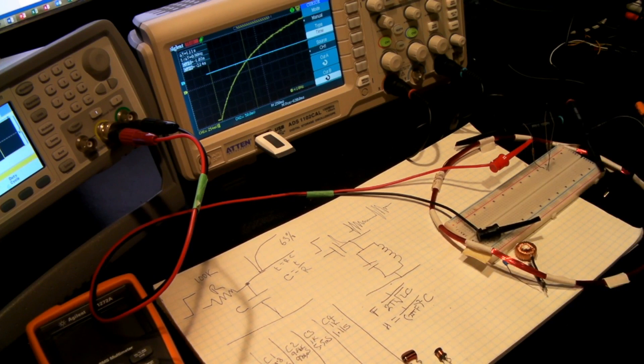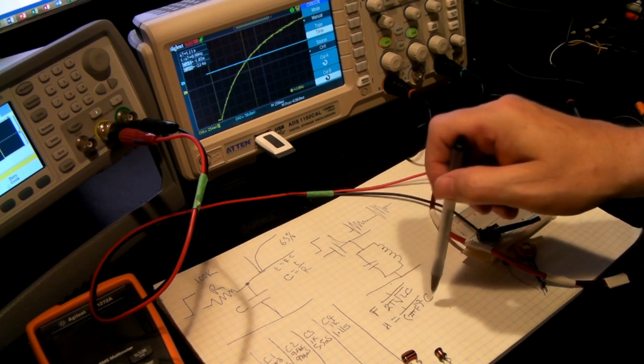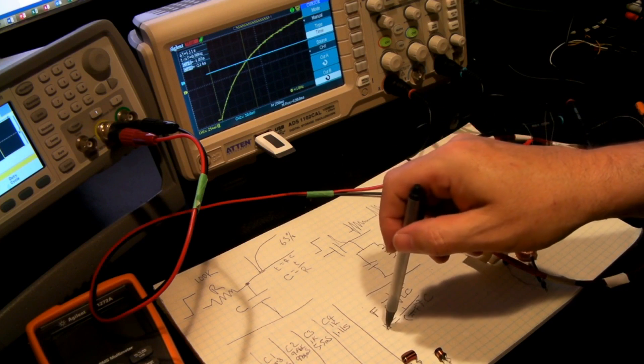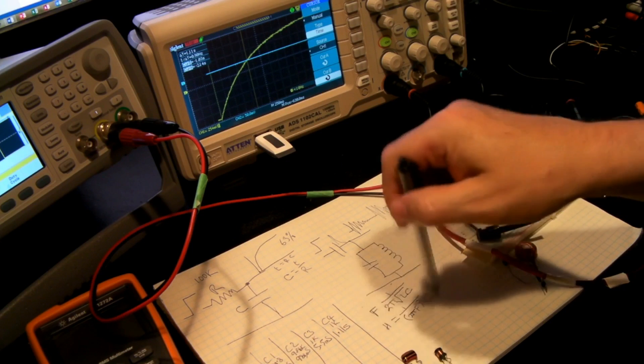So that ends up giving us, just rearranging this formula, that now gives us the value of the inductance in Henrys or micro-Henrys depending on how we do the math.